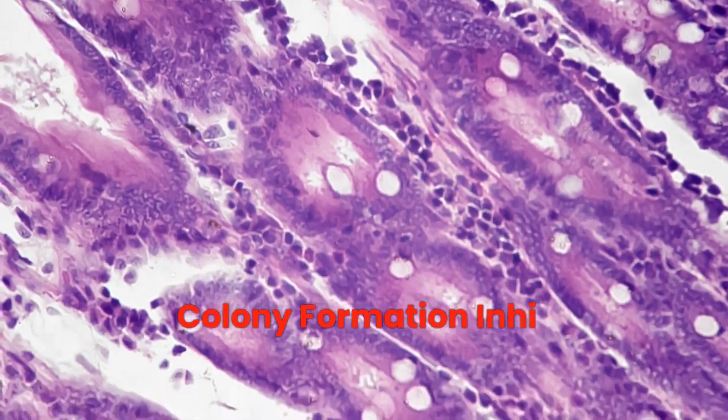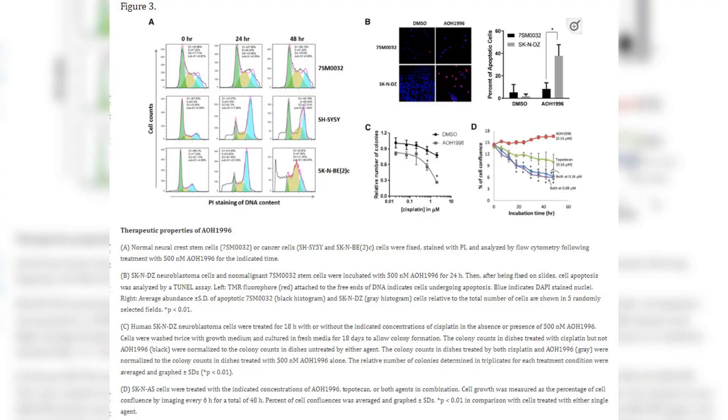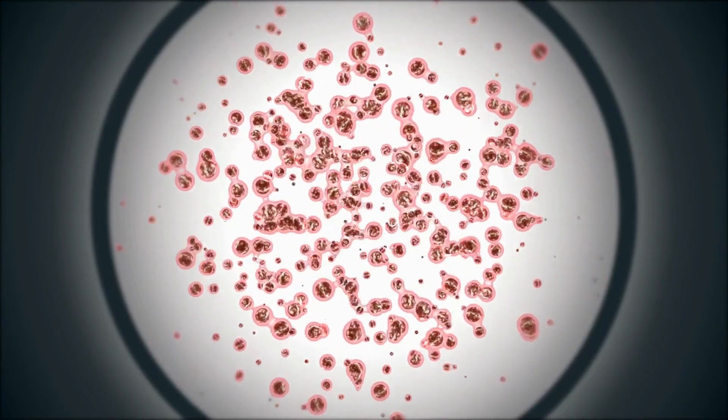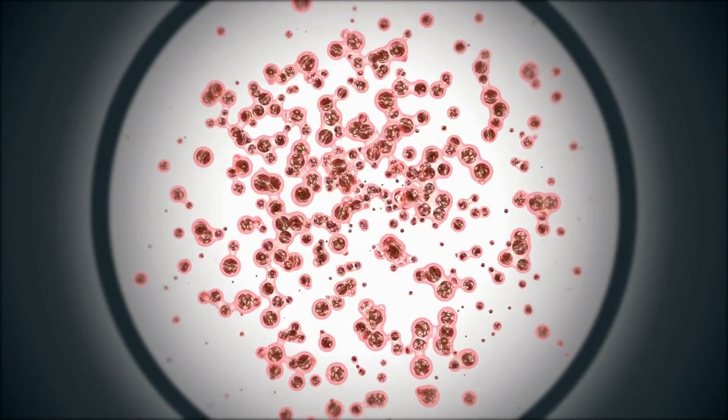Colony formation inhibition. The colony formation assay in image 3 is a robust in vitro method to assess long-term proliferation. AOH 1996 drastically reduces colony numbers, which we infer as a disruption of the cancer cells' ability to survive and proliferate under drug-induced stress.